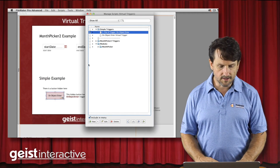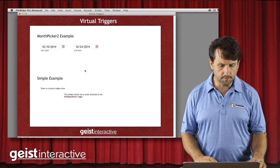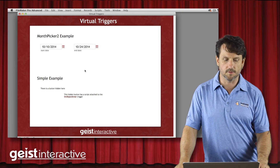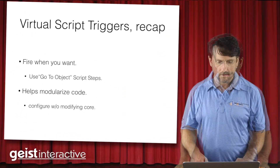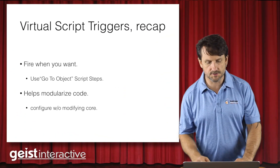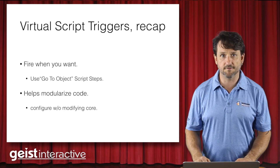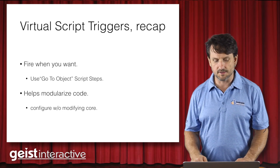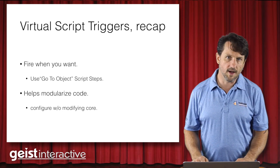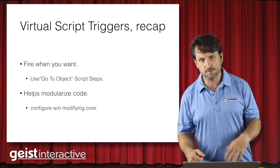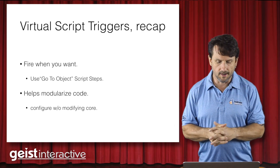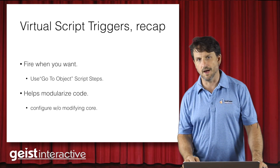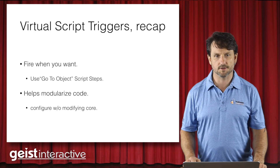That covers the simple example — and we've also seen the more complex Month Picker example of virtual script triggers. Just to recap: virtual script triggers are triggers that fire when you want them to, not when FileMaker wants them to. To do that, you use go to object script steps to fire the script triggers attached to those objects. It helps you keep your code modular, and you can configure your modules or features without having to modify the core code. Thanks very much. Bye-bye.